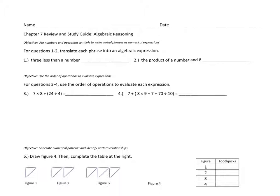The first objective is to use numbers and operation symbols to write verbal phrases as numerical expressions. Basically, we're going to translate regular written words into algebraic expressions. An algebraic expression is something that has a variable, at least one number, and at least one mathematical operation — which means add, subtract, multiply, or divide.